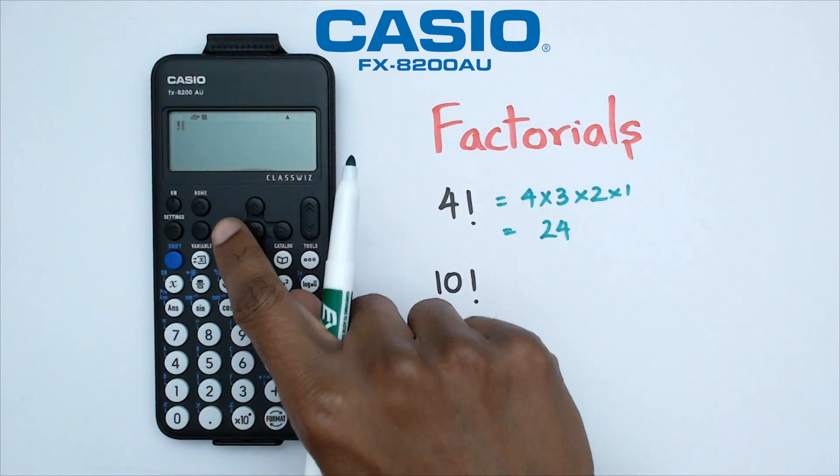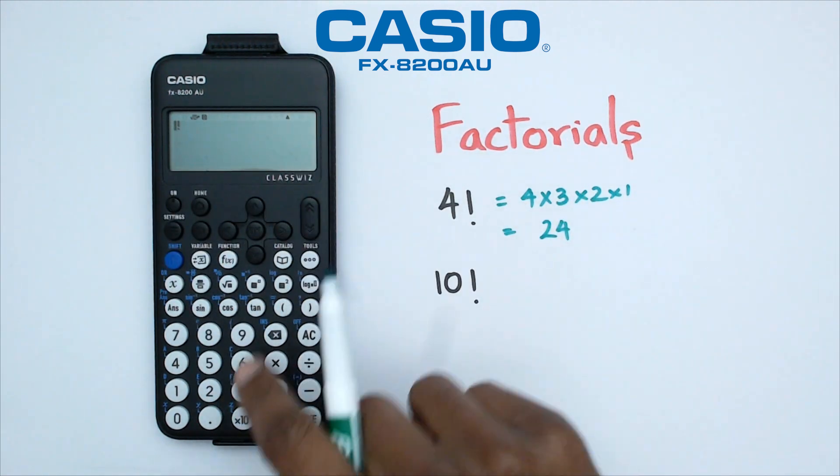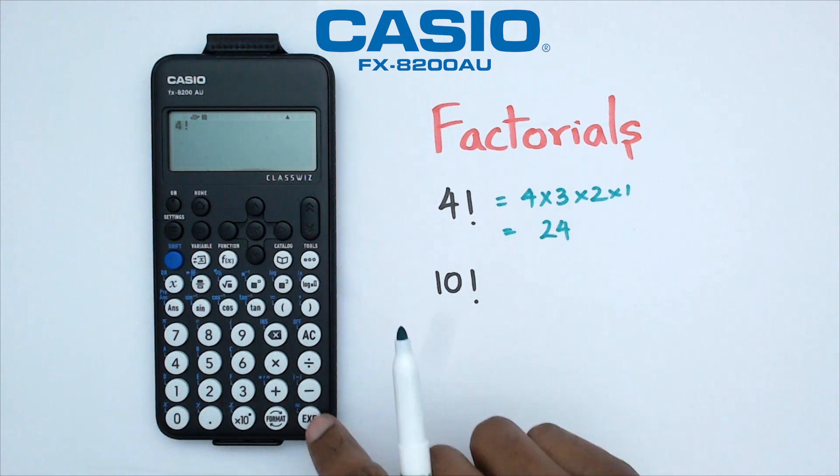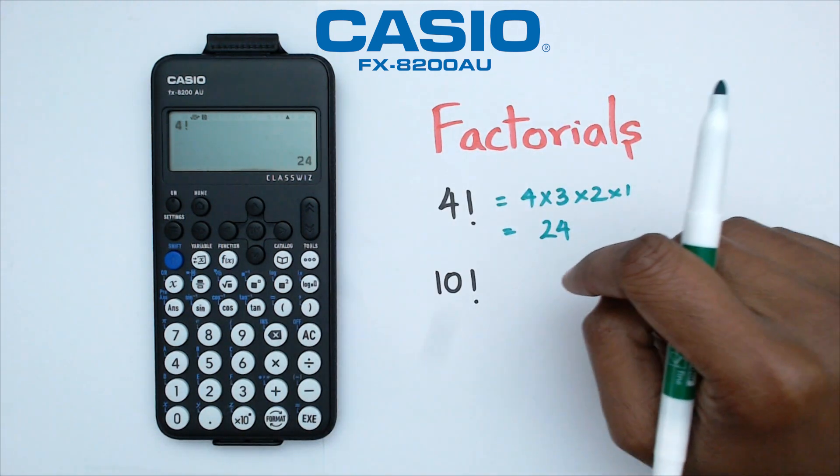Now we want to actually do 4, so I'm just going to go back before the exclamation mark, type 4, click factorial, and if I press exe, I'm going to get 24.